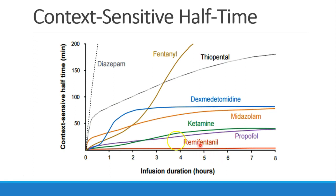The best would be remifentanil, which has a completely flat context-sensitive halftime. That's because it is metabolized faster than it can redistribute. So no matter how long you run remifentanil, the context-sensitive halftime is always the same and very, very short.